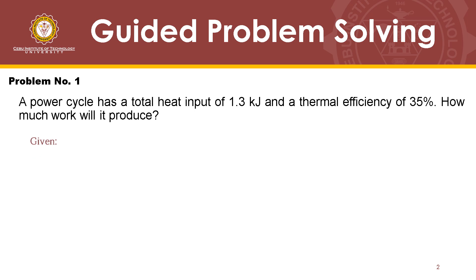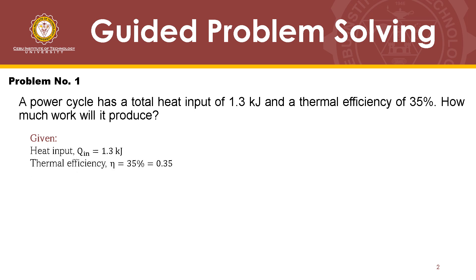In this problem, we are given the heat input, which is 1.3 kJ. We are also given the thermal efficiency, which is 35%, and can be written as 0.35. The unknown quantity in this problem is the work that is produced, or simply the work of the cycle.